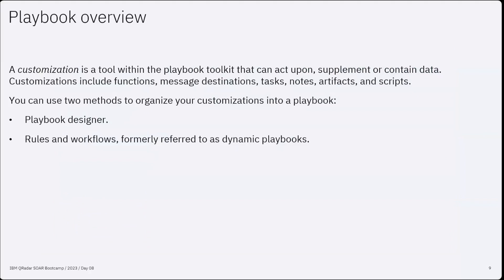The SOAR platform contains various playbooks that you design. The playbook runs when the conditions that you define are met. A condition is a change to an instance of the object type selected in the playbook. When a condition is met, you specify the activities you wish to run — such as running a script, starting a function, adding a task, adding or updating data in a field, or providing data to the next step to determine progress. This also includes customization, a tool within the playbook toolkit that can act upon, supplement, or contain data, including functions, message destinations, tasks, notes, artifacts, and scripts.